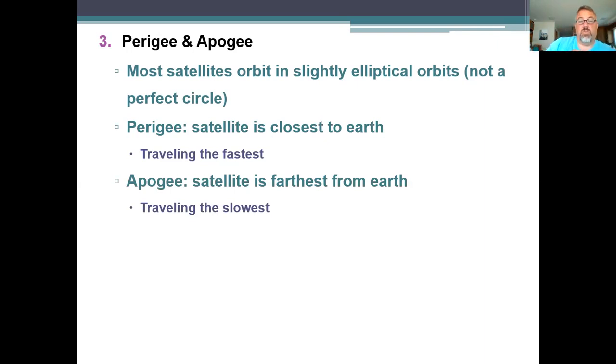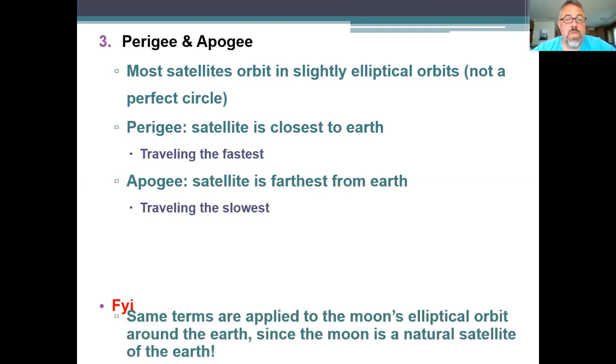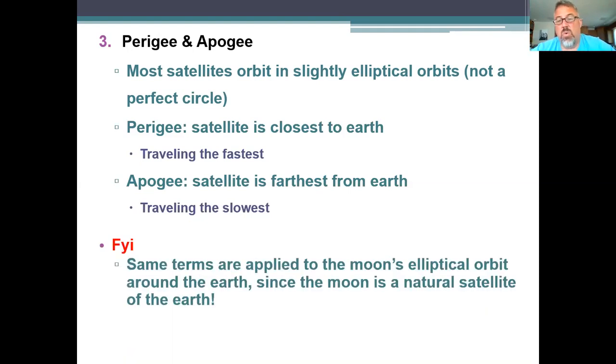Apogee is the furthest away. Now it's not a great distance, it's not that big of a difference, but the further out it is, the slower it moves. If we think about when we talked about the Earth, aphelion and perihelion, A away still works. Apogee, A away, it's furthest away. Again, when we talk about the moon, these same terms apply: apogee, perigee.